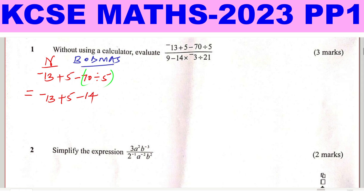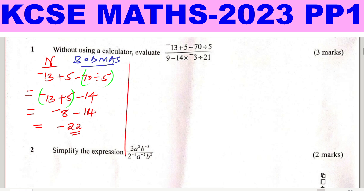Now we have addition and subtraction. Addition should come first, so negative 13 plus 5 gives negative 8. Then subtract 14: negative 8 subtract 14 gives negative 22. So that is the numerator.